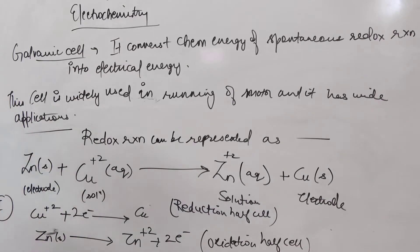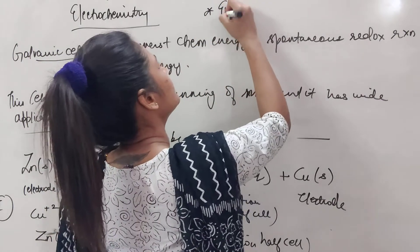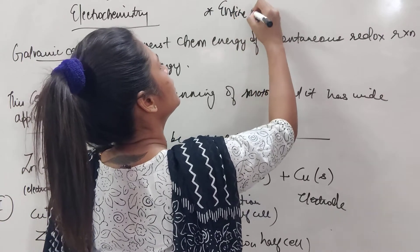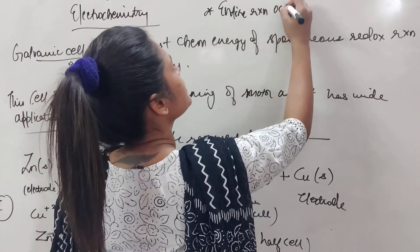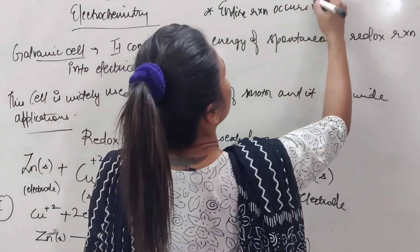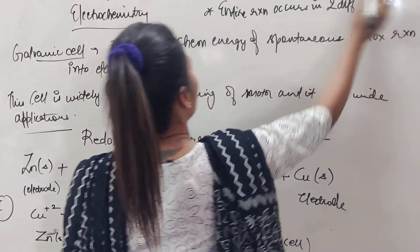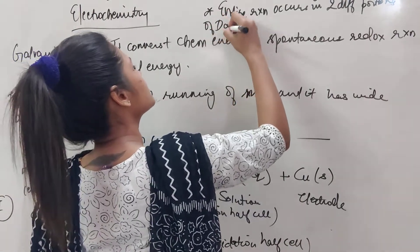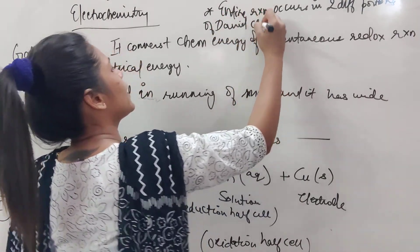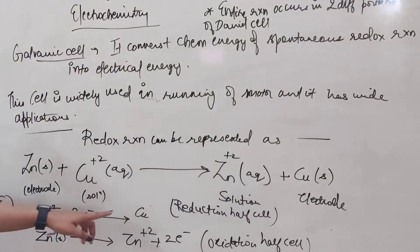So in these 2 parts the entire Daniel cell is divided and the entire reaction takes place in 2 portions of the Daniel cell. So the entire reaction occurs in 2 different portions of the Daniel cell.